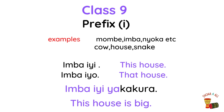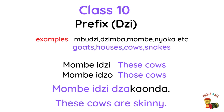Imba iyo — that house. Class 10, prefix dzi. All the nouns in class 10 are plural forms of nouns in class 9. Example phrase: these cows are skinny.